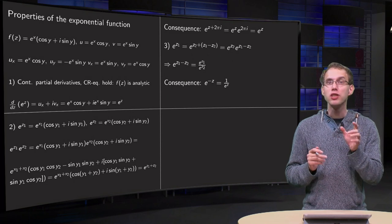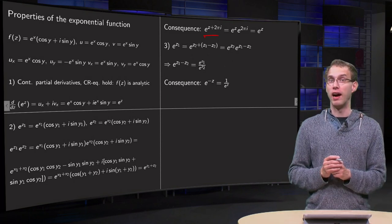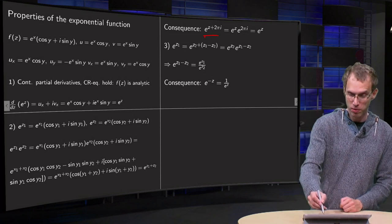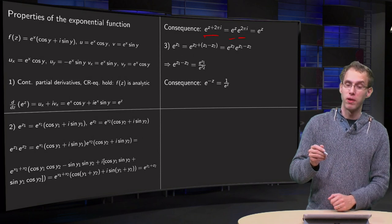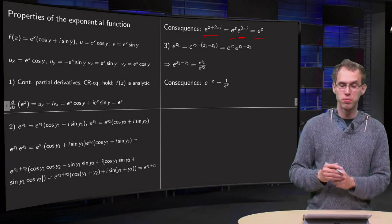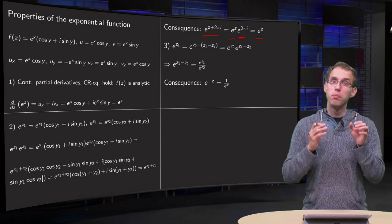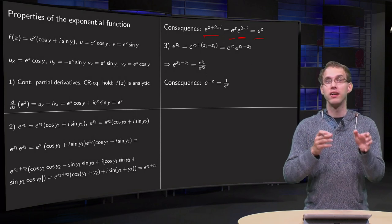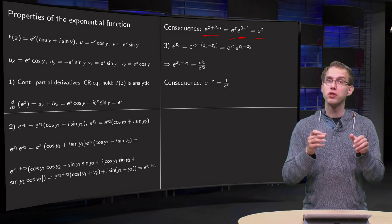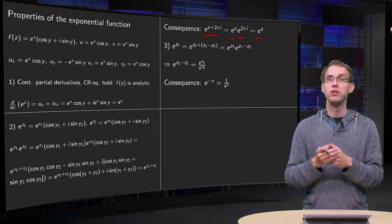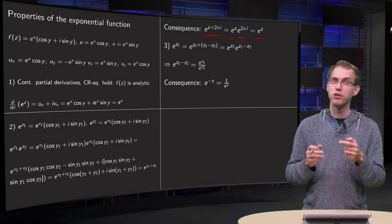This has one important consequence though: if we compute e^(z + 2πi), we get e^z times e^(2πi). Since e^(2πi) equals 1, this equals e^z. So e^(z + 2πi) = e^z, meaning multiple values in the domain are mapped to the same value. Our function is not one-to-one anymore.